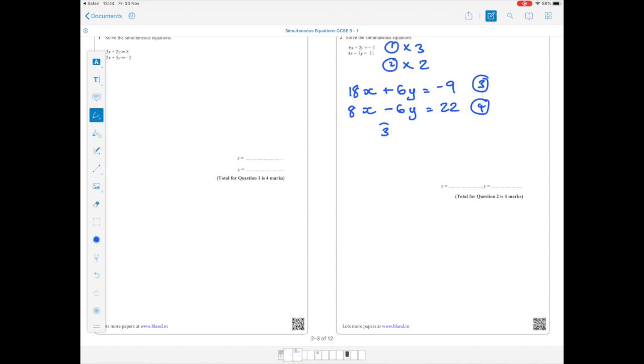So how am I going to get rid of my Y values? Well, I need to add them together because, remember, minus 6Y plus 6Y is going to be 0. So 18X plus 8X is 26X, the Y's disappear, and in terms of minus 9 plus 22, you get a value which is 13.